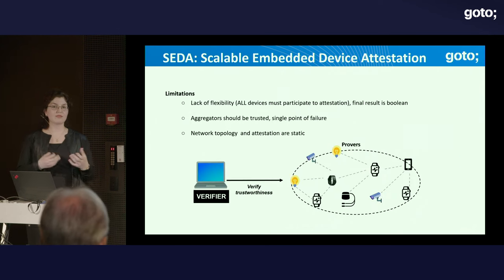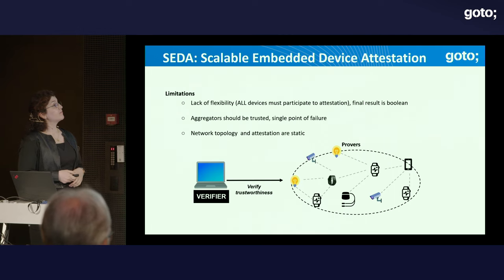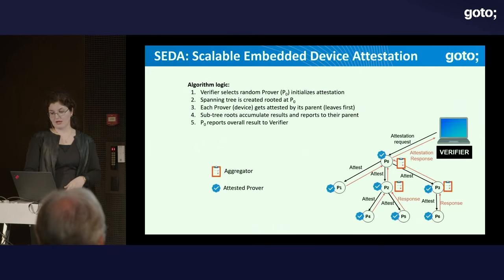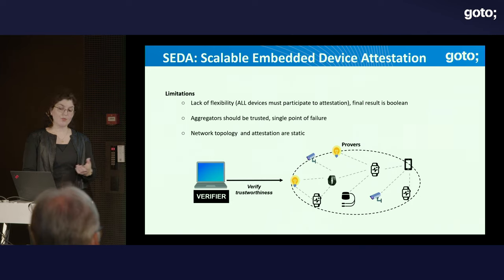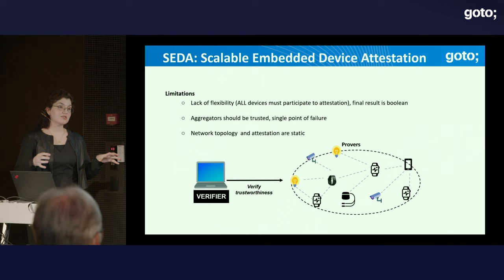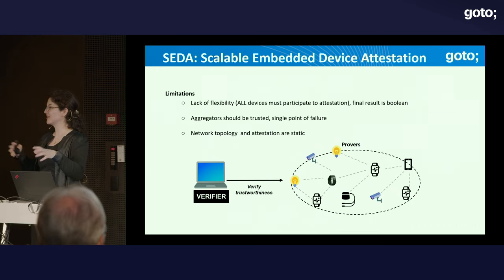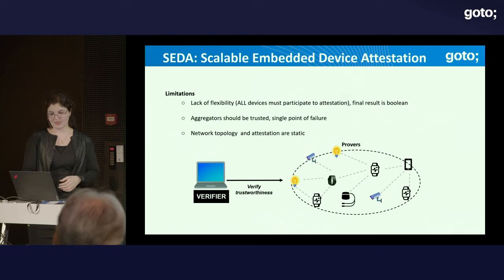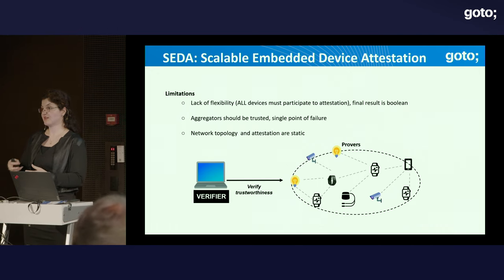SEDA was a very influential work in remote attestation for swarms, but it has a single point of failure — if the root device is compromised, it will corrupt all the answers from the network. It has been extended in the literature to address this. Another drawback is that the network topology is static: constructing a spanning tree is not practical when devices are mobile. So spanning tree requires static devices, such as on a manufacturing floor. Also, the attestation is static — it detects only when code has been injected and binaries changed.